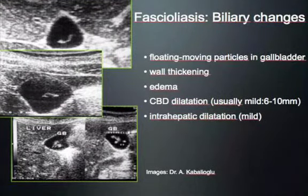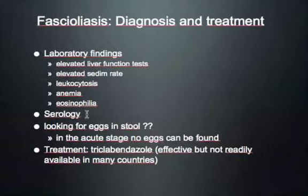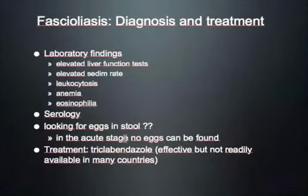Once in the bile ducts, these worms behave like gallstones and may cause common bile duct dilatation and biliary problems. On lab: it looks like cholecystitis, but luckily there is eosinophilia — so if you see cholecystitis with eosinophilia, think fasciola. Serology helps confirm it. Looking for eggs in stool doesn't help in the acute stage because the worm hasn't reached the egg-shedding phase yet. Treatment: triclabendazole.